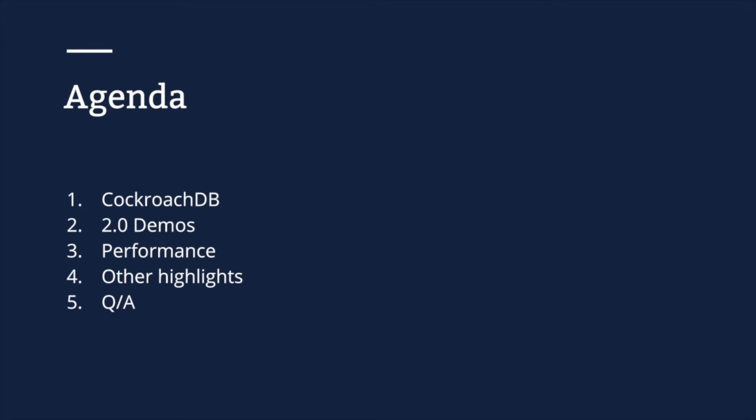The agenda is pretty simple. We'll do a quick overview of CockroachDB. We'll spend the majority of the time covering some highlights in the form of three demos. After that, we'll talk about some performance highlights, and we'll compare CockroachDB performance to that of Amazon Aurora. And then we'll share some other highlights from the release. I'll pause at certain points for questions, but I'll also save time for questions at the end.